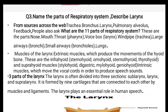Extrinsic muscles of the larynx, which produce movement of the hyoid bone, include the infrahyoid muscles: sternohyoid, omohyoid, sternothyroid, and thyrohyoid. The suprahyoid muscles include stylohyoid, digastric, mylohyoid, and geniohyoid. The suprahyoid muscles move the vocal cords in order to produce speech sounds.